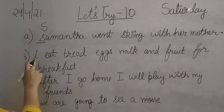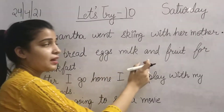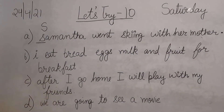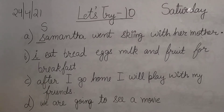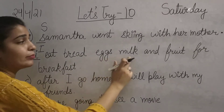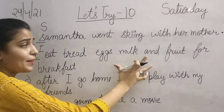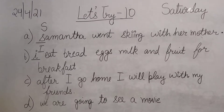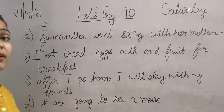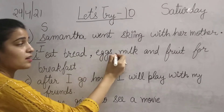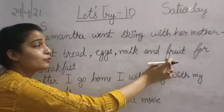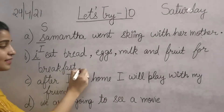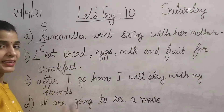The next sentence is: 'I eat bread, eggs, milk and fruit for breakfast.' First, I should be capital. And because there are many items listed, we will put commas: 'I eat bread, comma, egg, comma, milk and fruit for breakfast.' And at the end we will put a full stop.